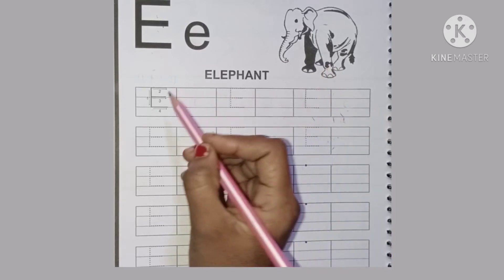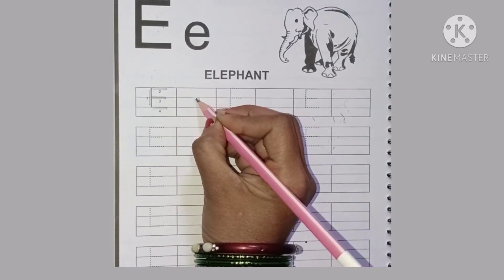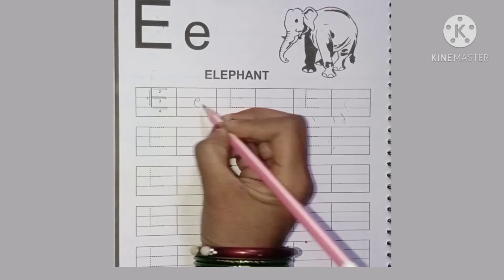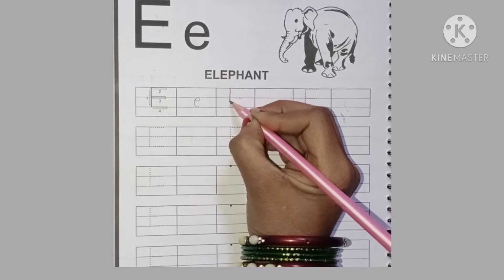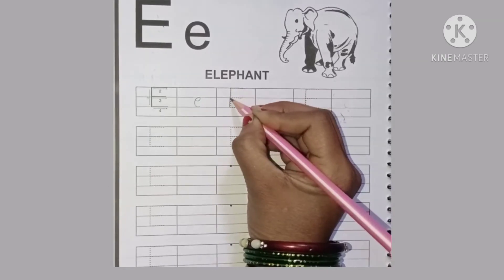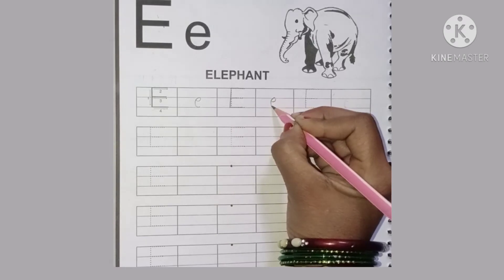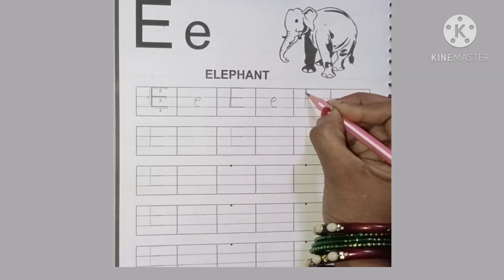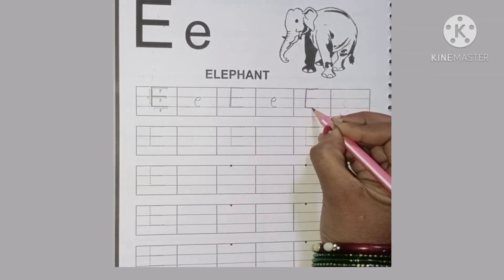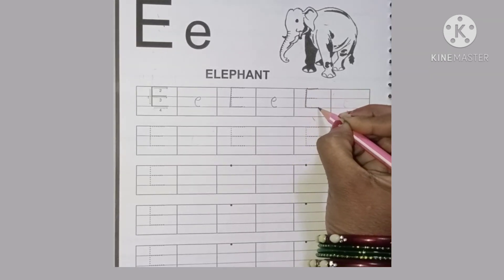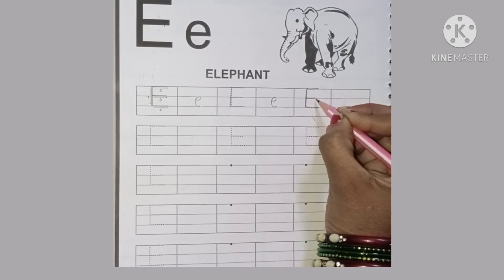Okay. And this is capital E. Now we will write small e here. This is capital E and this is small e. Baita, capital E — aap jab route down karenge na, to top aur bottom line to equal. But middle line ko aapne thoda sa small draw karna hai.